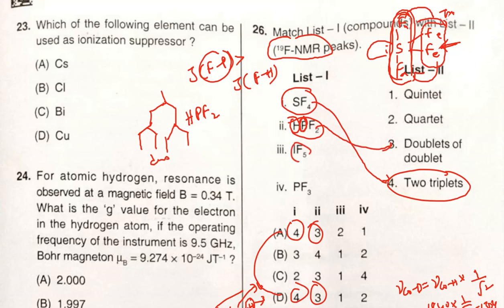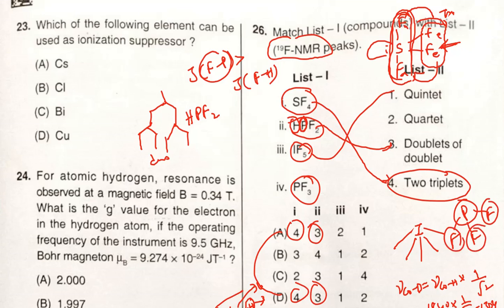Now IF₅ - what is the geometry? Simply square pyramidal, right? Square pyramidal geometry, that's why it is going to give quintet. And PF₃ is also pyramidal in shape. The geometry is very important to decide the chemical environment. From the geometry we can say it is going to give quartet.